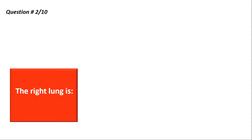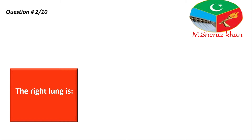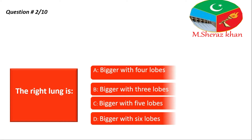Question number two: the right lung is — jaise ki aap jaante hain ki ye basically ribs mein hoti hai, yani ki aapke chest cavity mein, thoracic cavity mein dono lungs present hoti hain. Unmein ek right side par hoti hai aur doosri left side par. So sawaal yeh gaya hai ki the right lung is — kaisi hai?